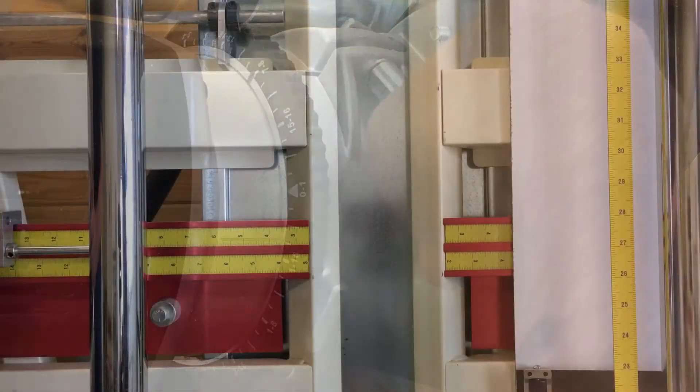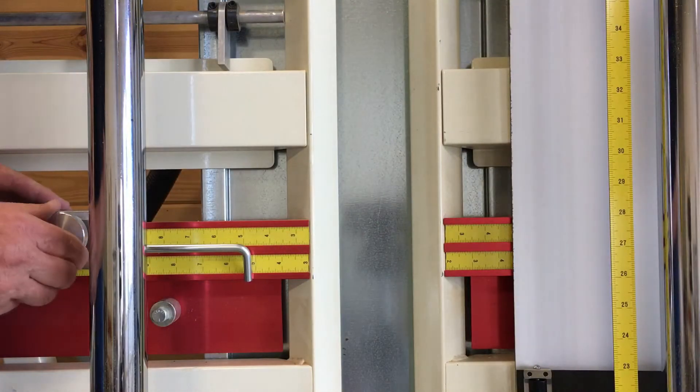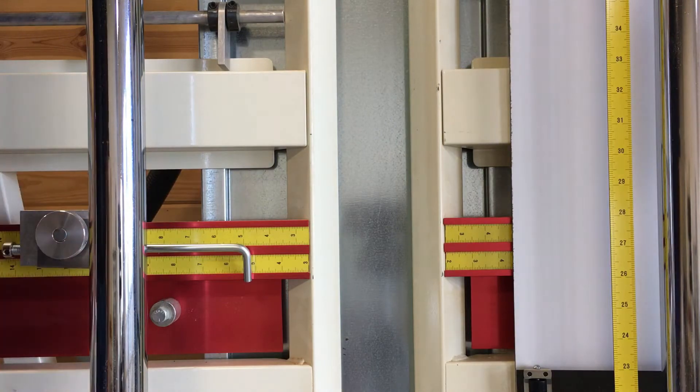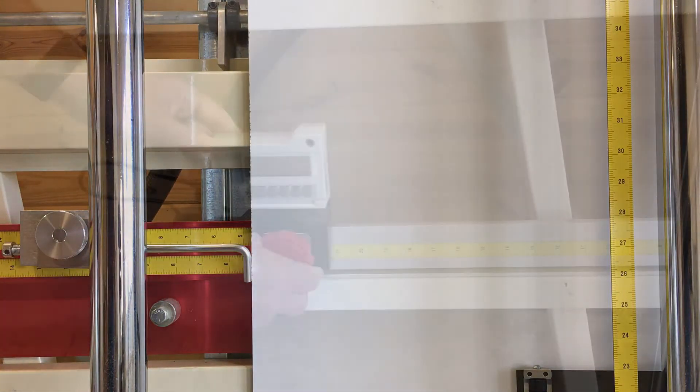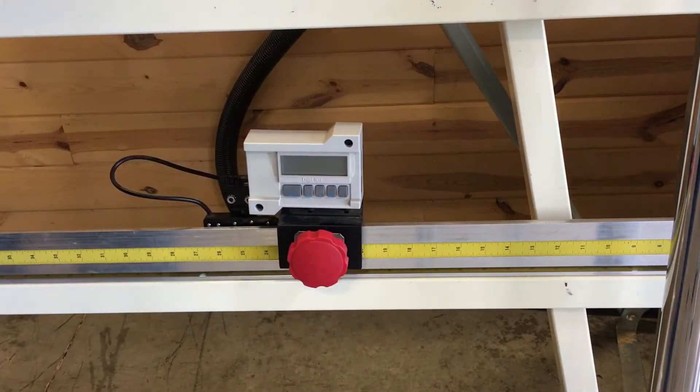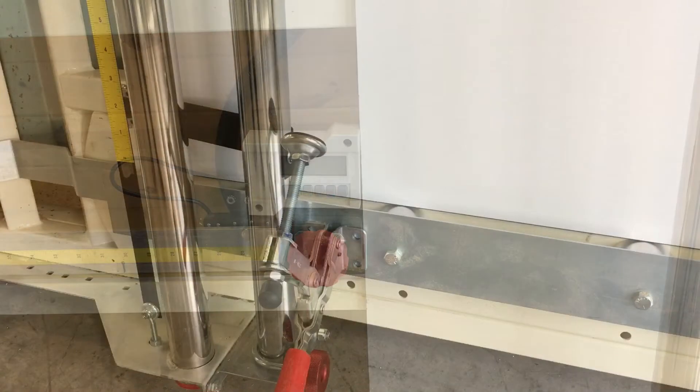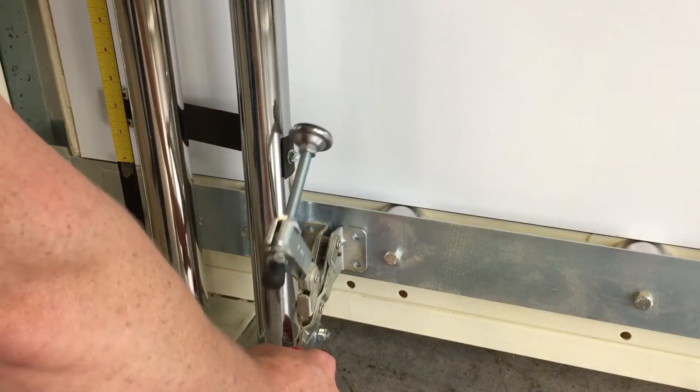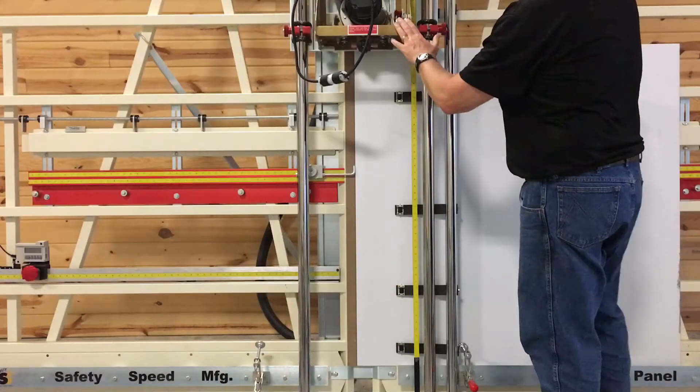Multiple stops and clamps give you accurate repeatability and allow you to quickly and efficiently route ACM panels either around the perimeter or anywhere that is required. As with cutting the panels, you can also route both vertically or horizontally.